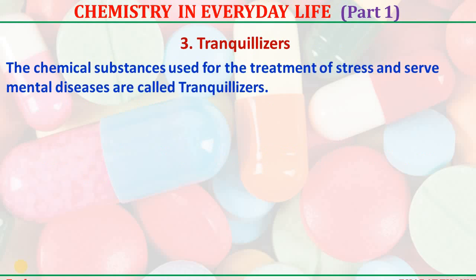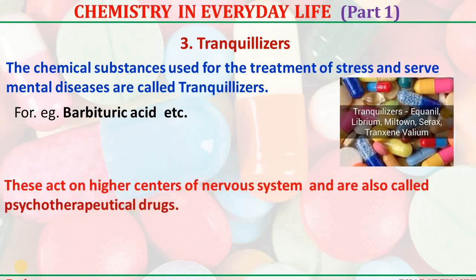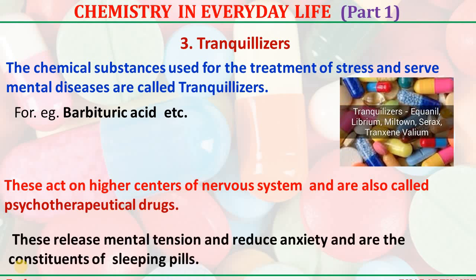Tranquilizers — the chemical substances used for the treatment of stress and severe mental diseases are called tranquilizers. For example, barbituric acid. These act on the higher nervous system and are also called psychotherapeutic drugs. These relieve mental tension and reduce anxiety and are the constituents of sleeping pills.